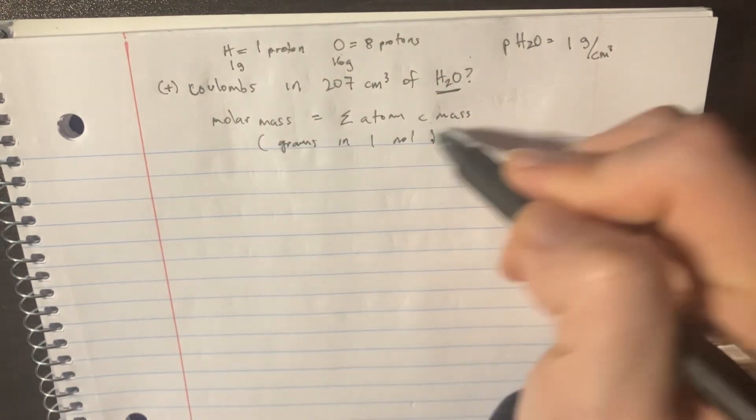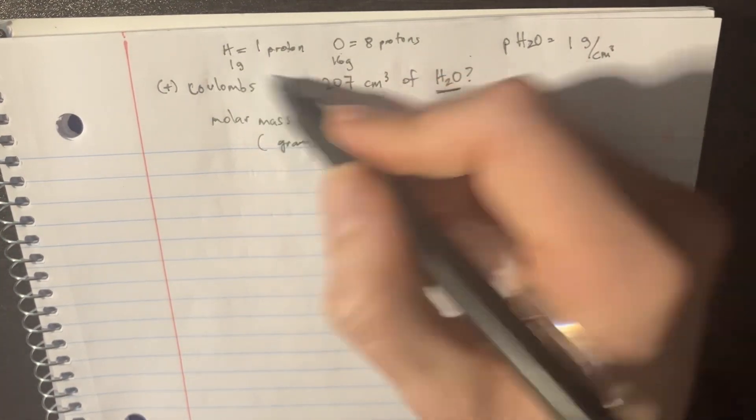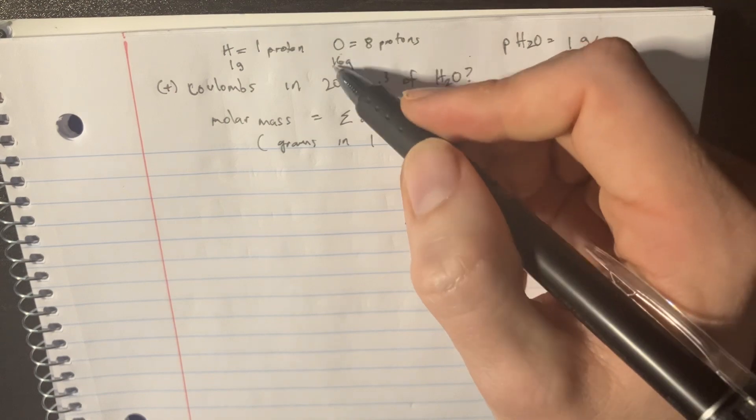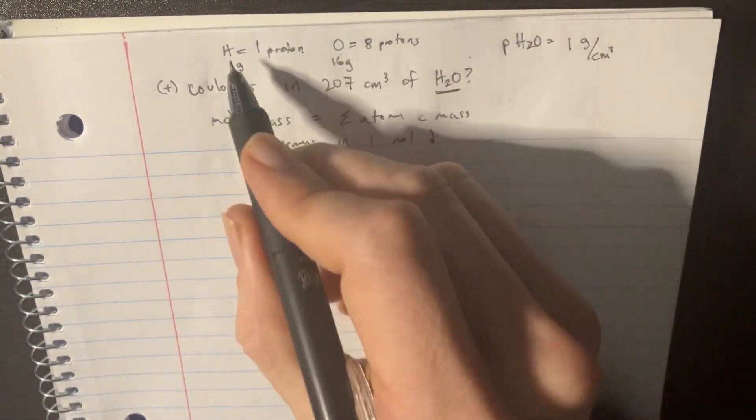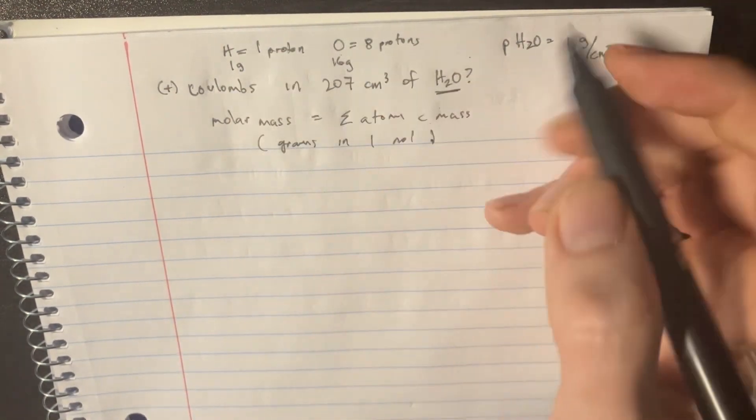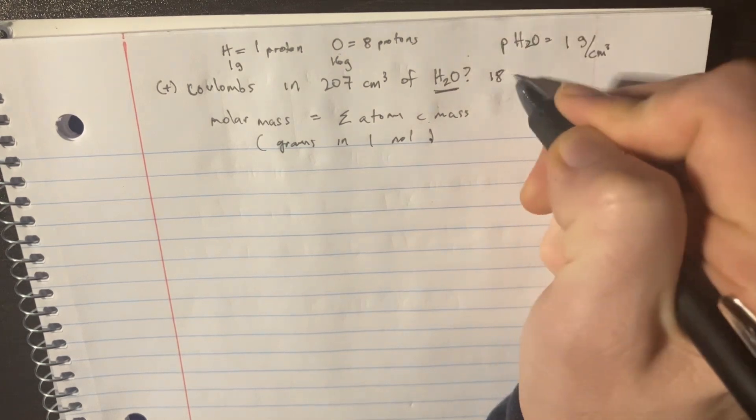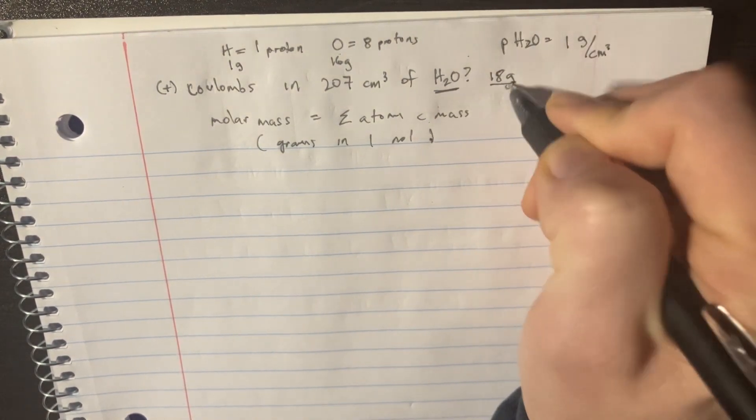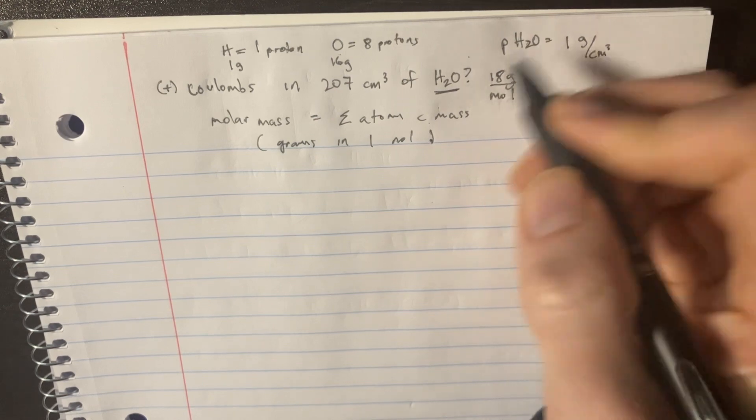So it turns out the atomic mass of hydrogen is 1 and the atomic mass of oxygen is 16. This is again found on the periodic table. If we add this up, it's H2O. That's going to be a total of 18 grams. So 18 grams in one mole of H2O.